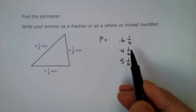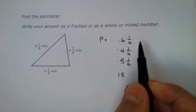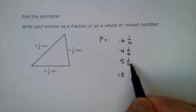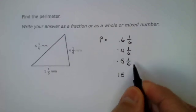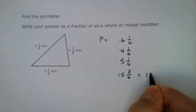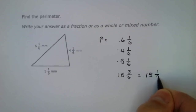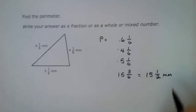4 plus 6 is 10 plus 5 is 15. 1/6 plus 1/6 plus 1/6. They all have a common denominator. The only thing I have to do is add the numbers in the top. 3/6 and reduce that. 15 and 1/2 and make sure I put my units.